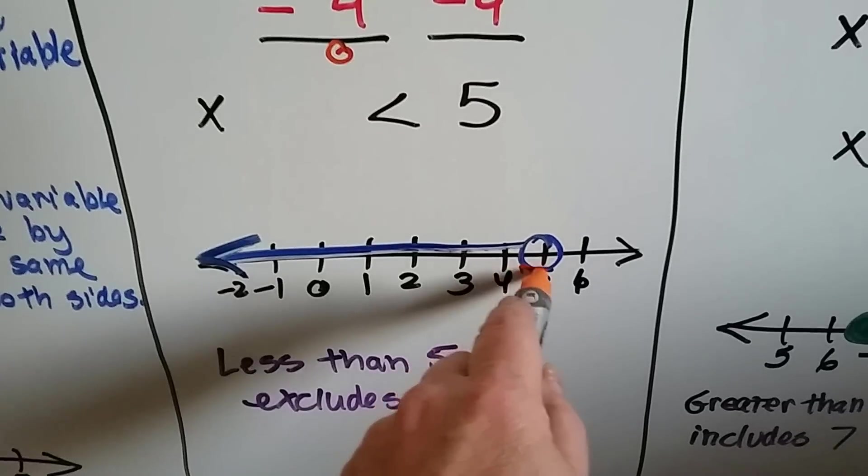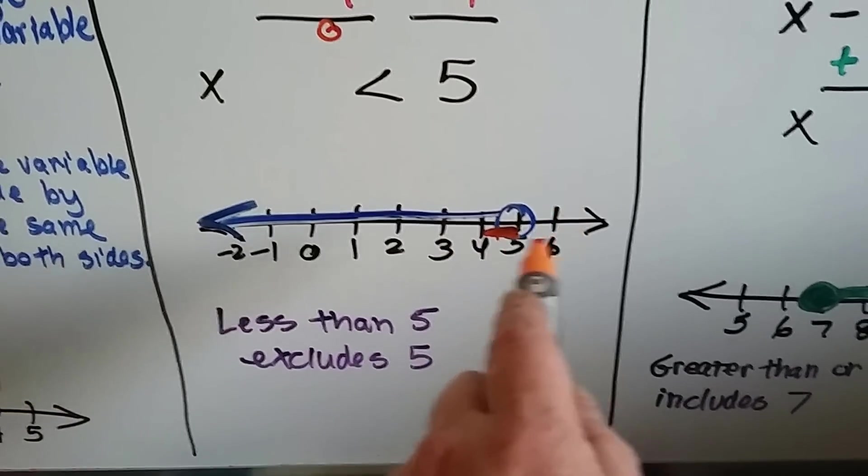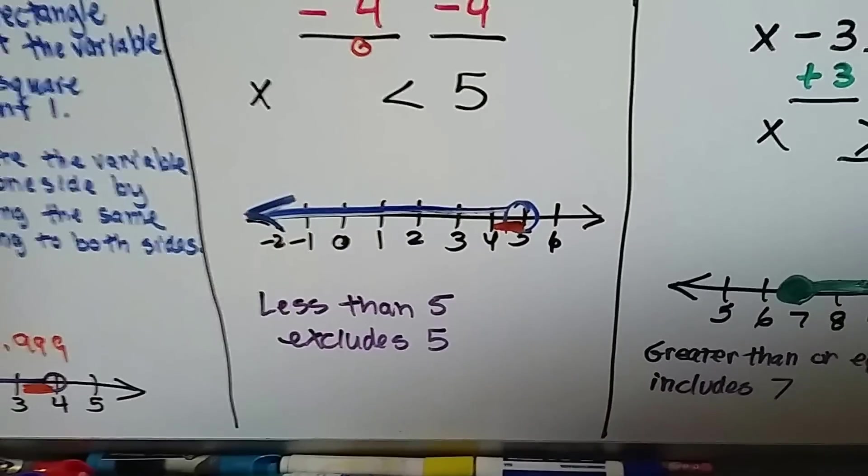So x is less than 5. It could be right up to the 5 in between the 4 and 5, but it just can't be the 5. So I made it an open circle, because it excludes the 5, and I made it everything less than 5.